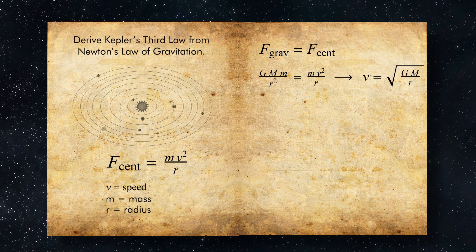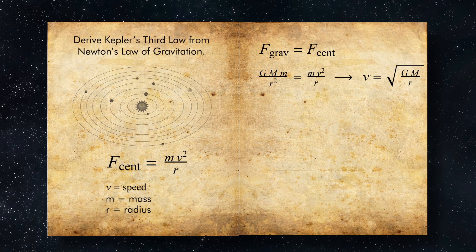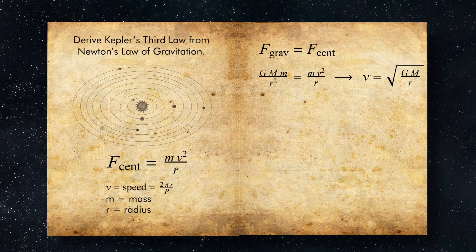Now, since we're considering a circular orbit at the moment, we also know that there's a relationship between the speed v and the orbital period p. The planet has to go around the whole circumference of the orbit, 2πr, in the time p. So the speed must be equal to 2πr over p.